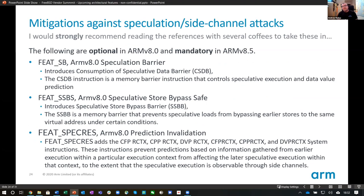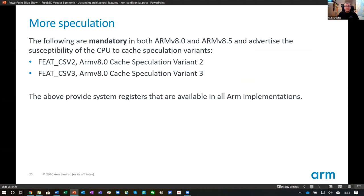Thanks to Spectre and Meltdown, there are additional options to mitigate against speculation side-channel attacks: Speculation Barrier, Speculation Store Bypass Safe, and Prediction Invalidation. The following two features are mandatory in both ARM 8.0 and 8.5 as far as speculation goes, to minimize impact. They provide system registers available across ARM implementations.